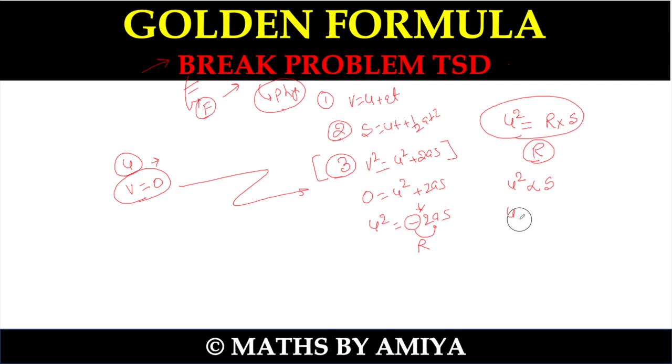So we can say U1 upon U2 whole square is equal to S1 upon S2. If we apply the same break, then velocity upon velocity squared is equal to distance upon distance, or displacement upon displacement. This is the golden formula.